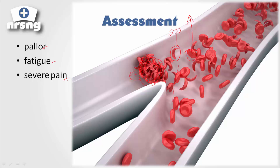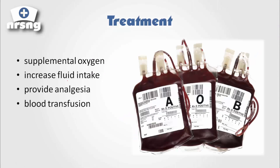The primary interventions for our patient: hemoglobin carries oxygen in our RBCs, so if we have less functional hemoglobin we're going to have less oxygen. We need to supply supplemental oxygen to our patient. We're also going to increase fluid intake and provide analgesia because they are going to be in severe pain.